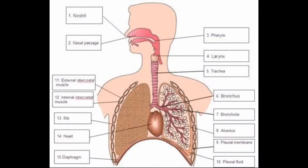We inhale and exhale through our nose. The nasal cavity is divided into nasal chambers by a partition, and each nasal chamber opens to the outside by a nostril. The nasal chambers have nasal hairs and mucus. The oxygen-carrying air we inhale reaches the trachea via the nasal chambers.